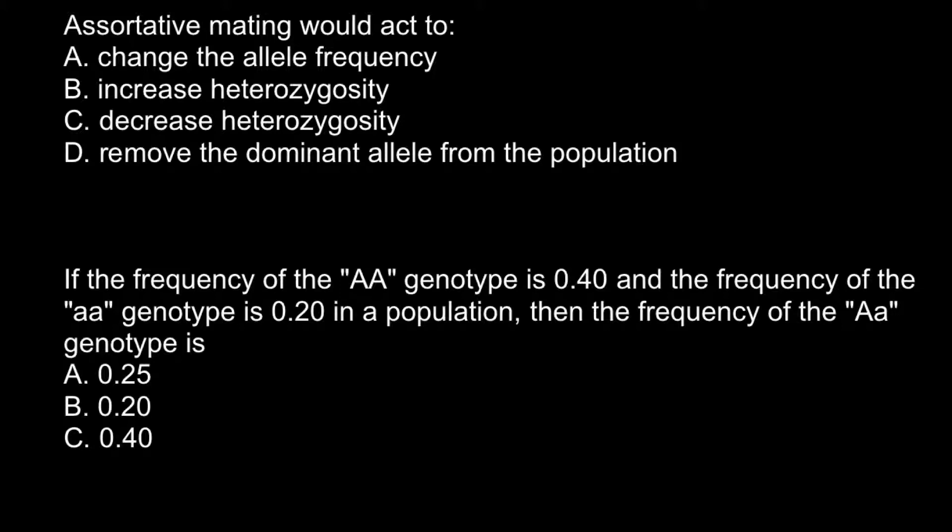We also do assortative matings. For example, we prefer our own race, or males prefer females that are shorter than them and vice versa. Females prefer someone who is taller than them, and people of the same educational background prefer each other and the same ethnicity.